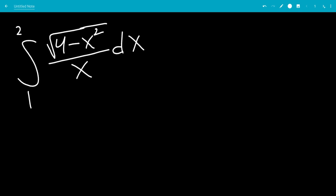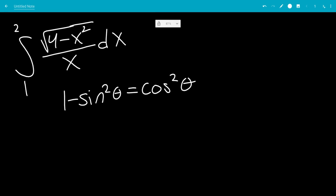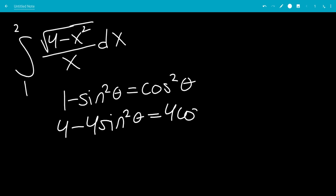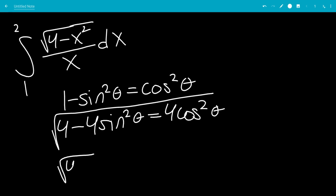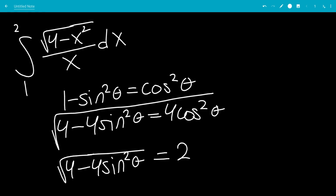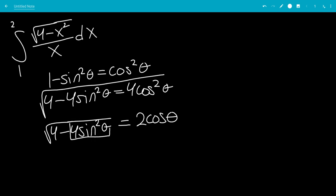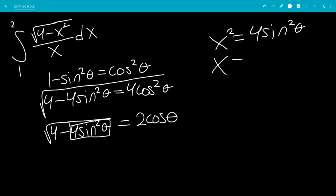So what substitution should we use? We know that 1 minus sine squared theta equals cosine squared theta — a trig identity. Multiplying by 4, we get 4 minus 4 sine squared theta equals 4 cosine squared theta. Taking the positive square root on both sides: the square root of 4 minus 4 sine squared theta equals 2 cosine theta. So we let x squared equal 4 sine squared theta, giving us x equals 2 sine theta.